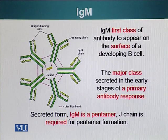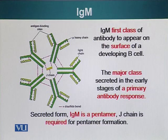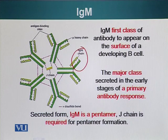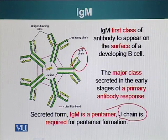Once IgMs are secreted, they form pentamers — meaning five of these antibodies join together — which now have 10 antigen binding sites. In order to form this pentamer, another protein is required: the J-chain, which helps join these five IgM molecules to form the pentamer.